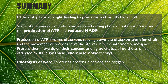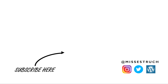To summarize: the light dependent reactions involve chlorophyll absorbing light energy, leading to photo ionization of chlorophyll. Energy from released electrons drives ATP and reduced NADP production via chemiosmosis — electrons move down the electron transfer chain, releasing energy to pump protons from the stroma into the intermembrane space, creating an electrochemical gradient. Protons then move back by facilitated diffusion through ATP synthase, producing ATP. Photolysis of water also produces protons, electrons, and oxygen as a by-product.